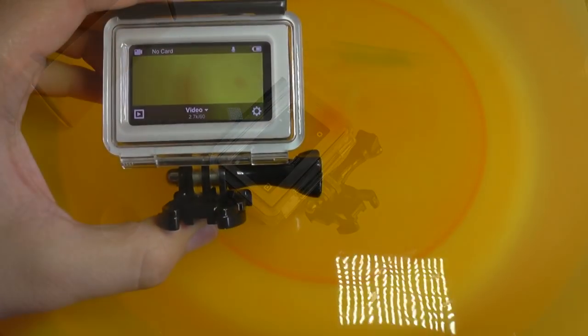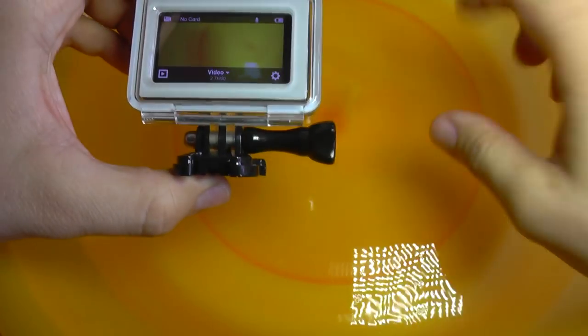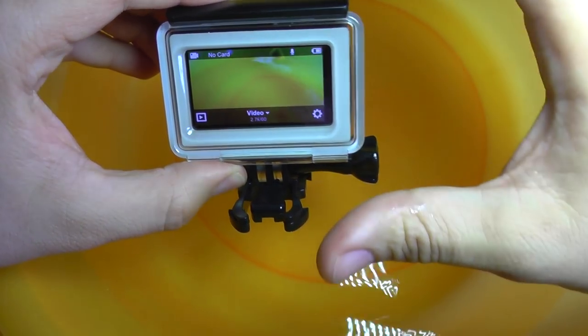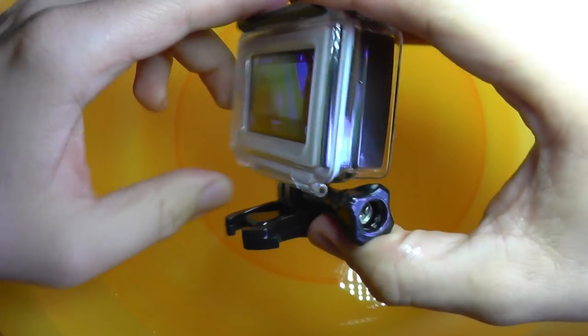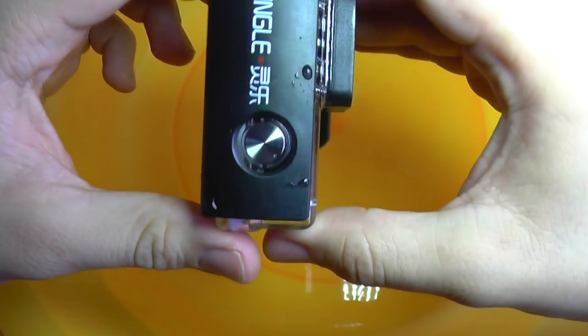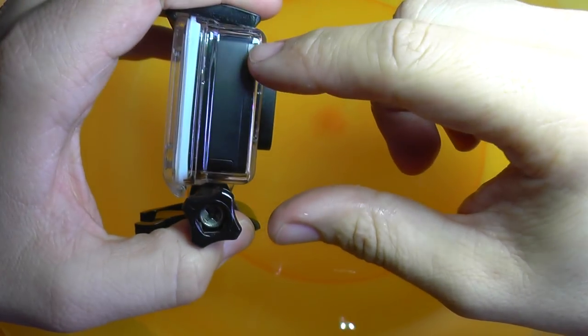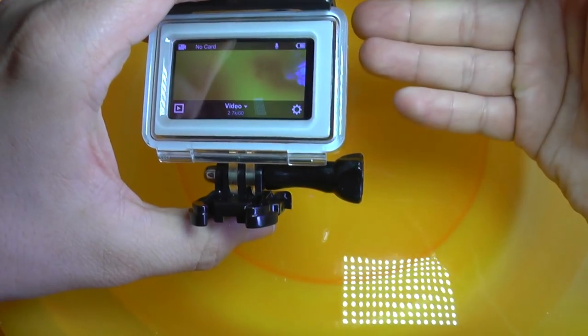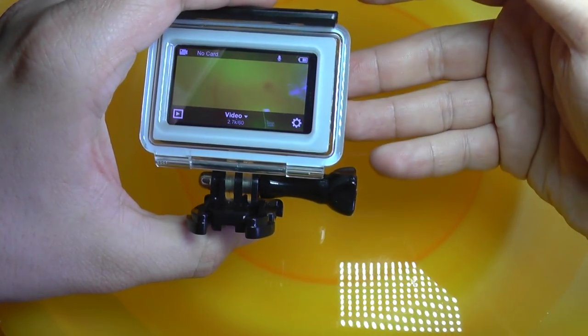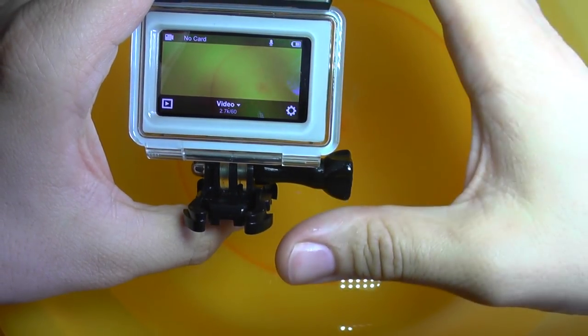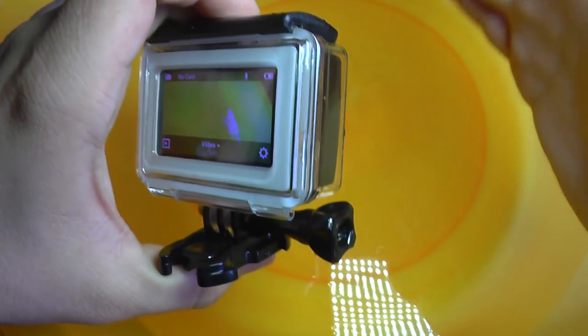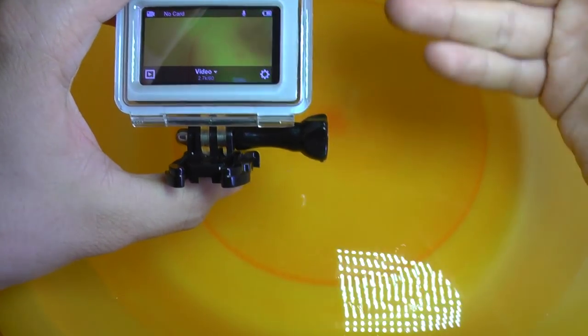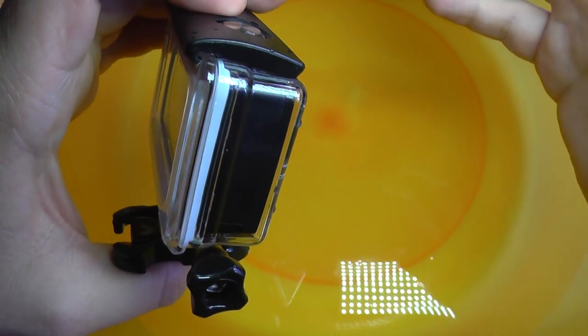So here is the big test. We have water here and the camera is still inside. A word of caution: when buying a waterproof case, before using the camera underwater, you should always test the case first. It's very easy to do that. Put some tissues inside and no camera, just put tissues, close it secured, and put it in a bucket of water overnight.